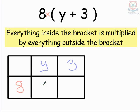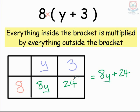Now all we need to do is multiply the two values to work out what each of these cells in the table would represent. 8 times y is 8y. 8 times 3 is 24. So by adding those two together you can see that by expanding our bracket the solution is 8y plus 24. The table just helps us to remember to multiply everything by everything.